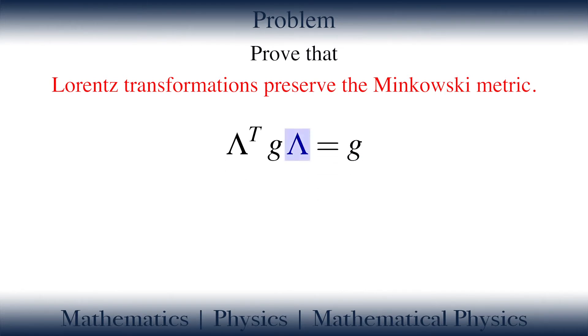In this relation, lambda is the Lorentz transformation, and lambda superscript with t means the transpose of the Lorentz transformation. G is the Minkowski metric.